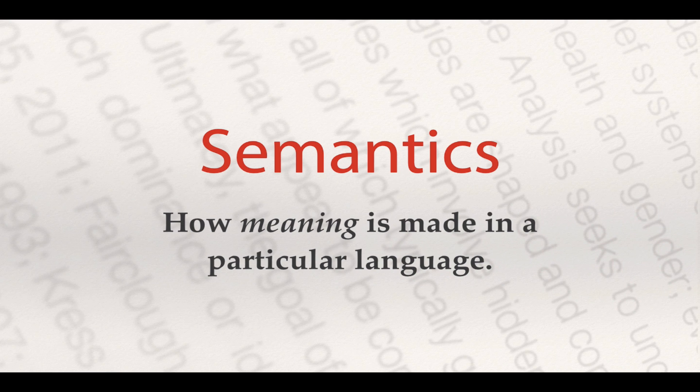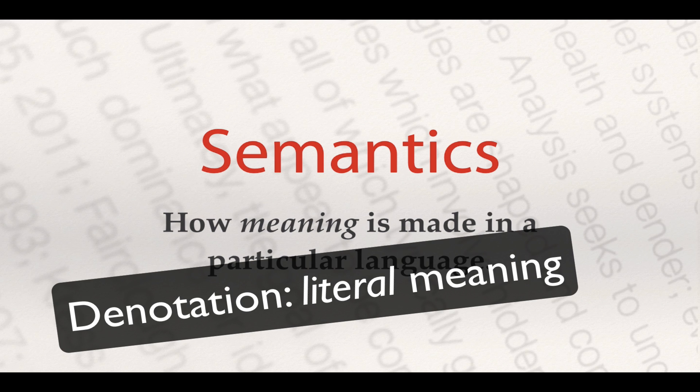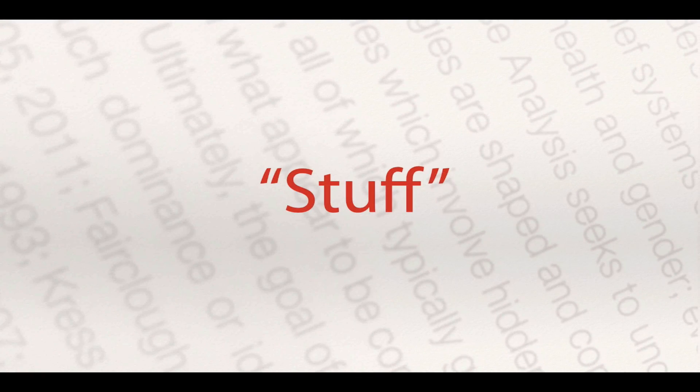The next thing that we'll think about is semantics, and that's how meaning is made in a particular language. Words can have lots of different meanings beyond just their denotative meaning — in other words, the meaning that you would see in a dictionary. So take, for example, a word like 'stuff.' Often we'd think of this as having a very specific, understandable meaning. But that meaning is not actually clearly residing in the word itself. The other linguistic choices that we're making around a word can often determine what the meaning of it is.